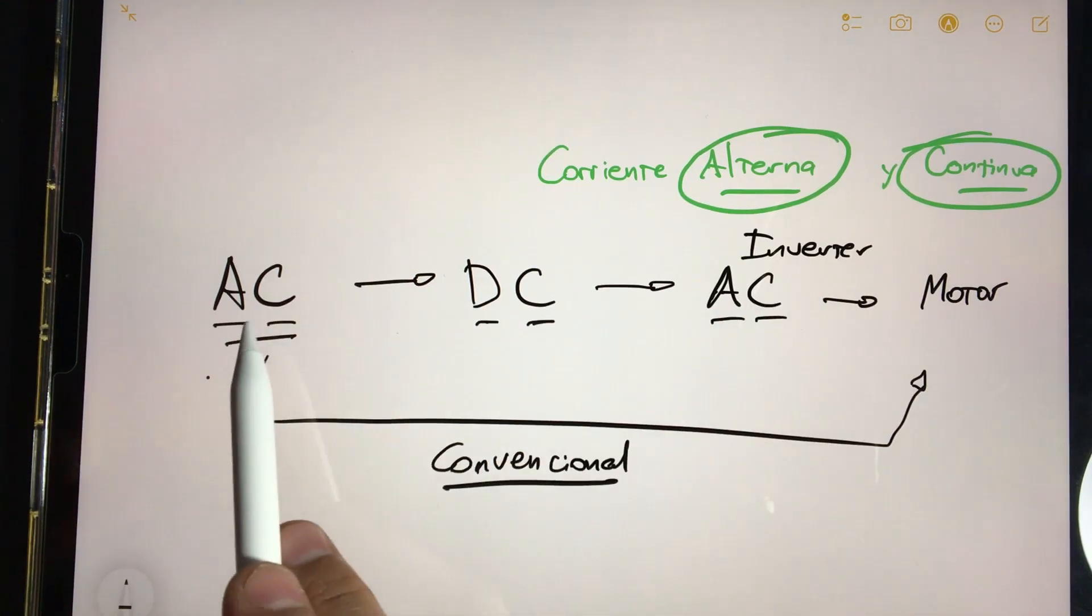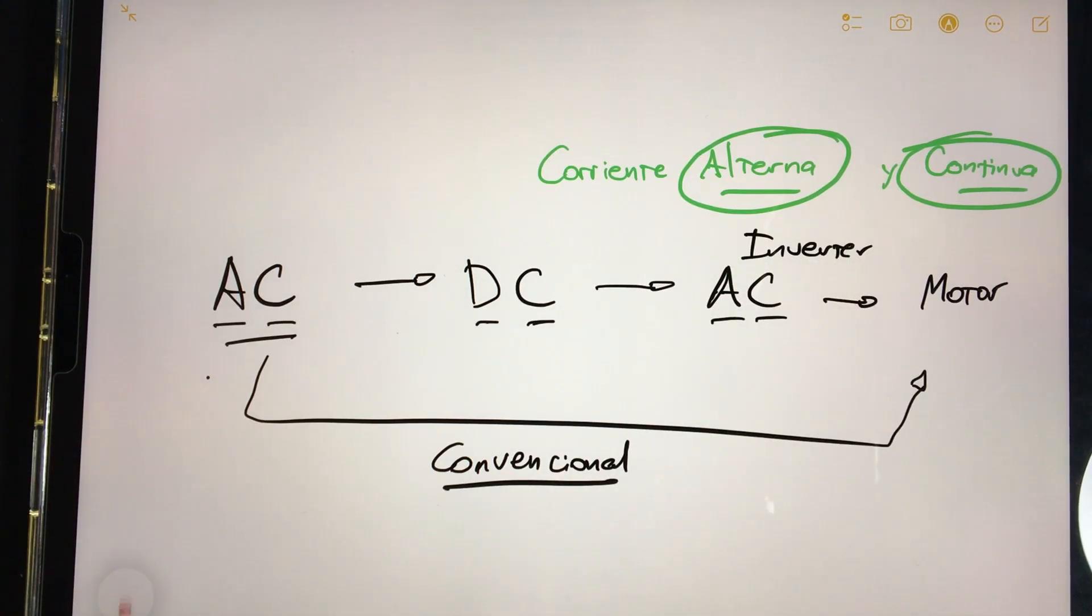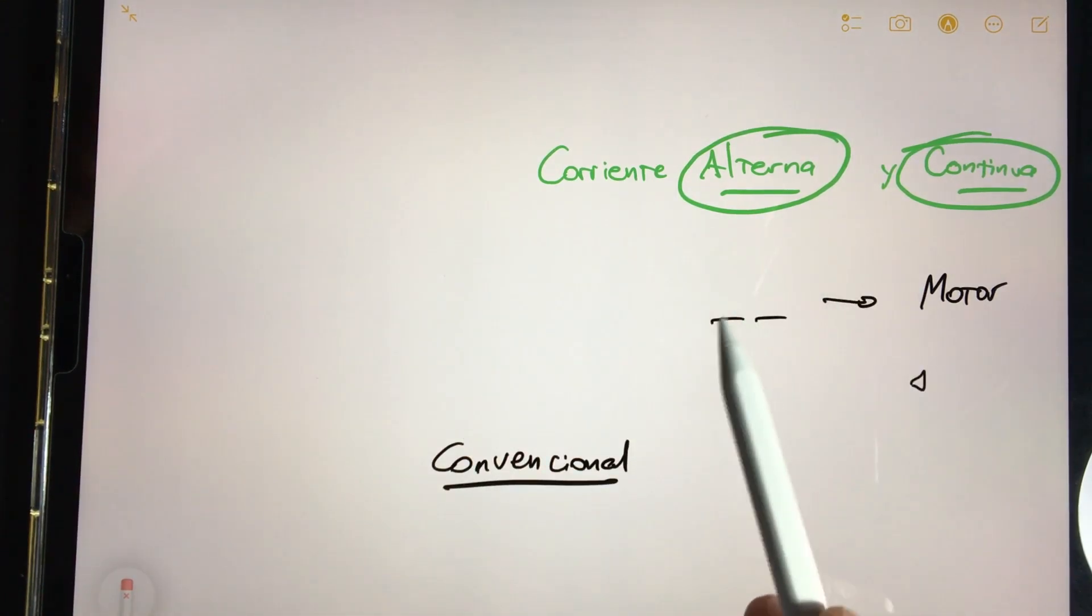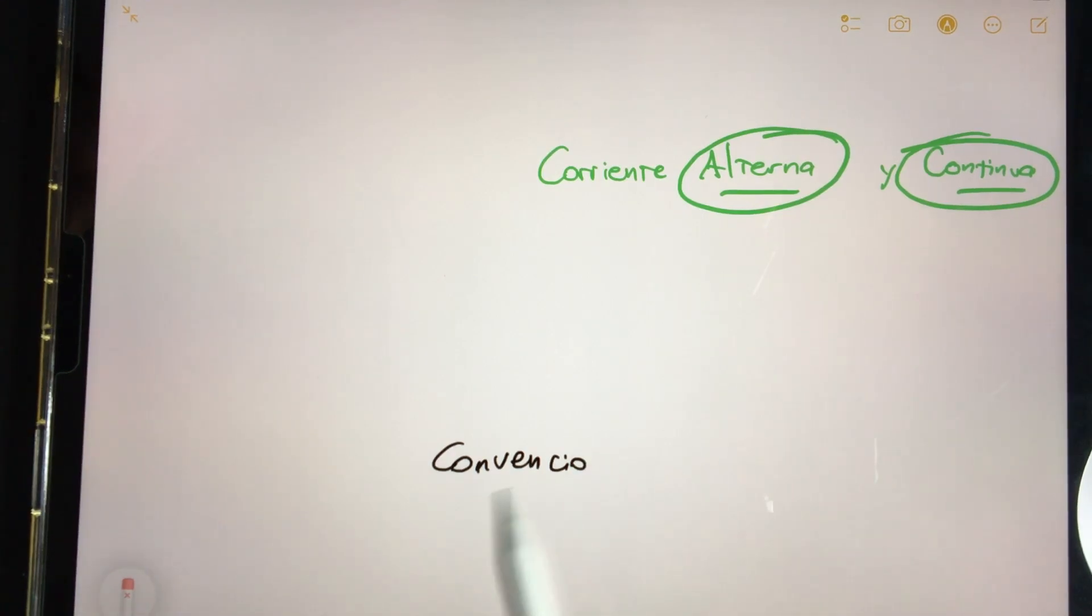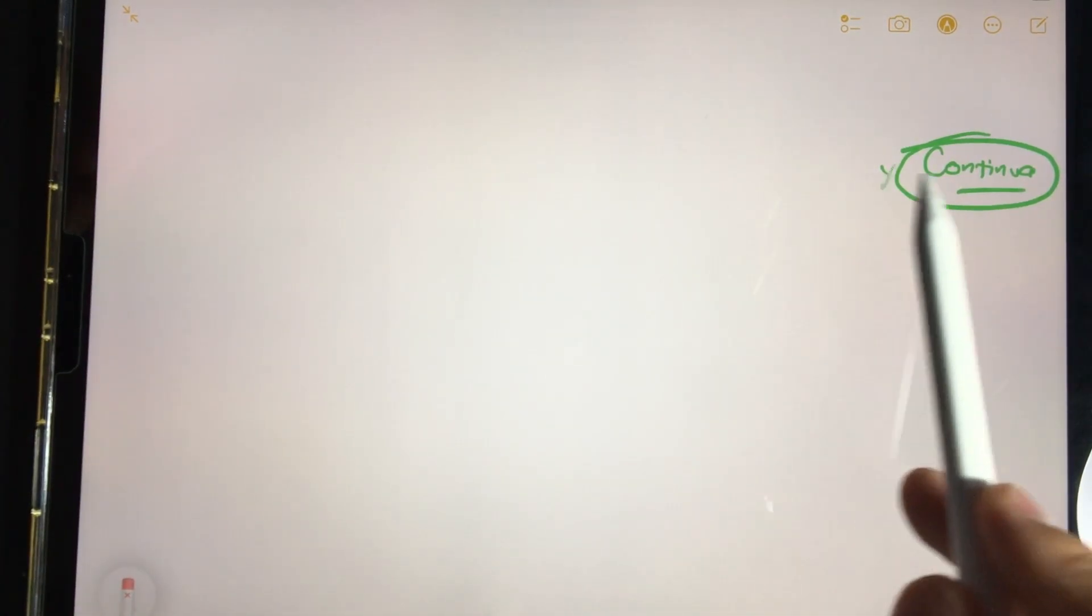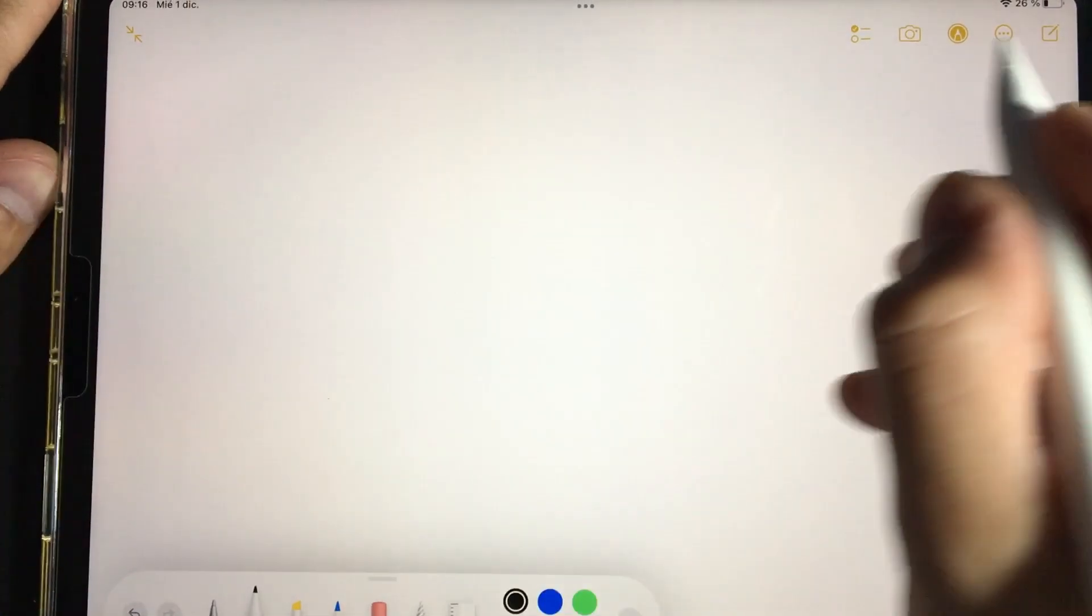When this conversion into investment occurs, we call it an inverter system. Well, now the question is this. What is alternating current and what is direct current? If we said that it was the flow of electrons, this difference will be in how the electrons circulate in a circuit. What do we mean?